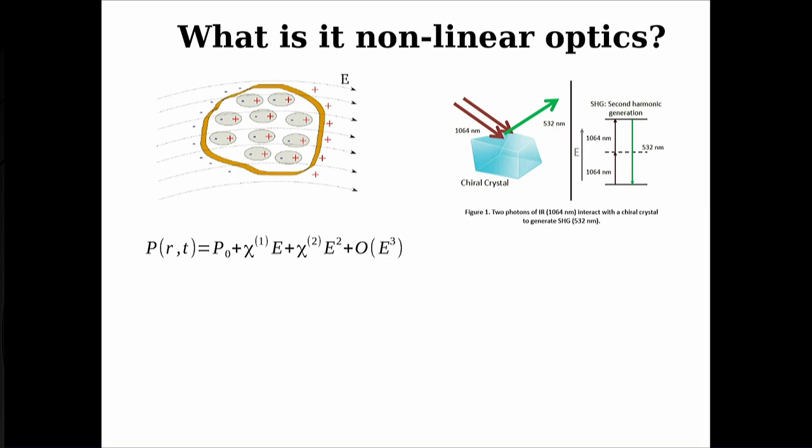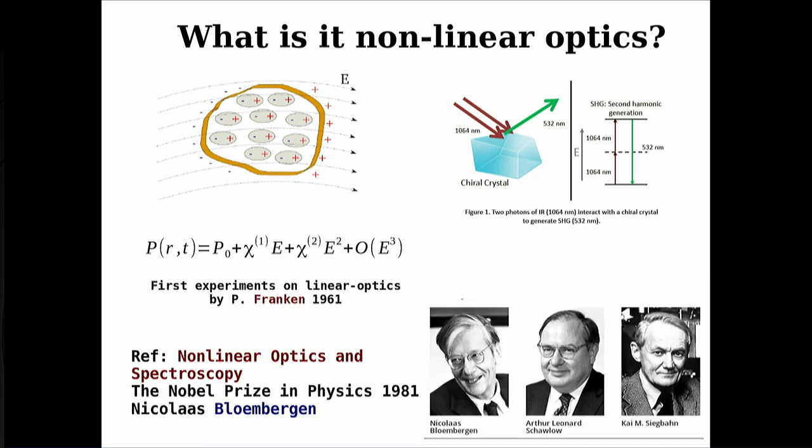What does nonlinear mean in practice? Normally in daily life you don't see any nonlinear phenomena in optics, and the reason is simple: to get a nonlinear response from a material, you need a very strong laser source. For this reason, the first experiment in nonlinear optics dates to 1961, performed by Franken just one year after the discovery of the laser.